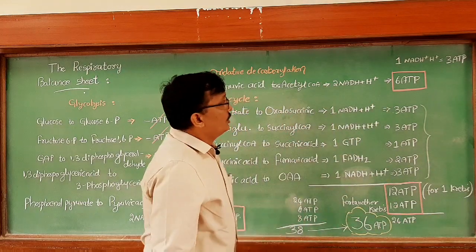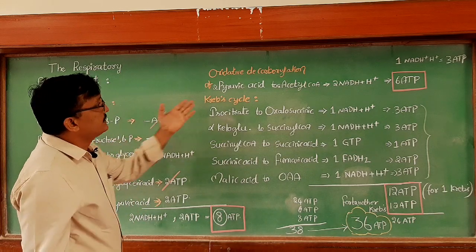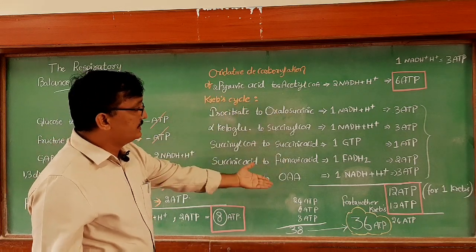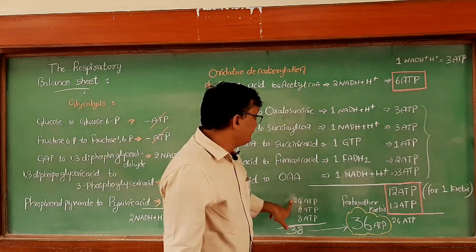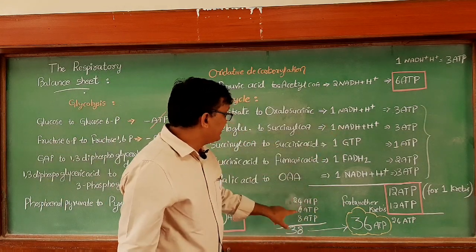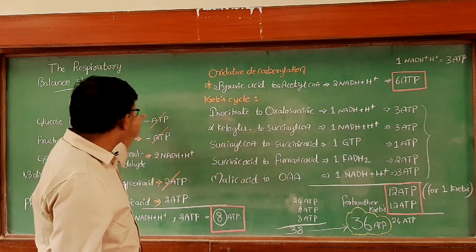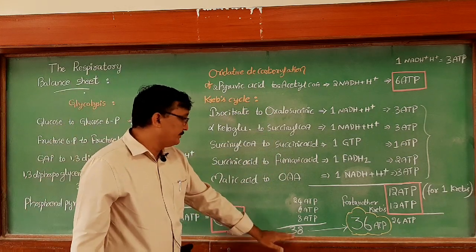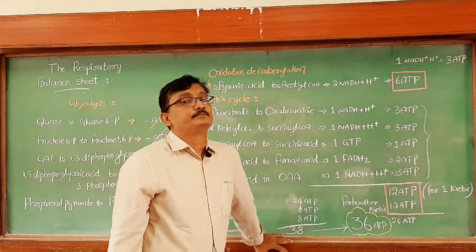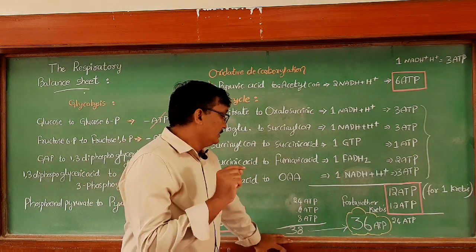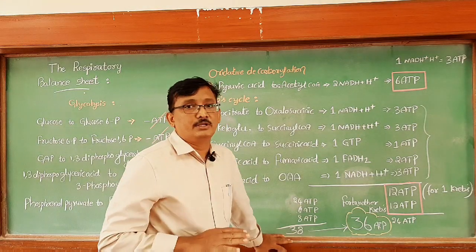So let us total all the ATP molecules produced from glycolysis, oxidative decarboxylation of pyruvic acid, and Krebs cycle: 24 ATPs from Krebs cycle, 6 ATPs from oxidative decarboxylation of pyruvic acid, and 8 ATPs from glycolysis — totally 38 ATP molecules.